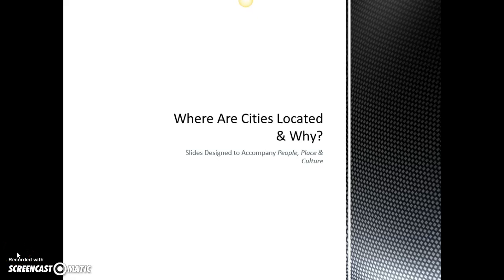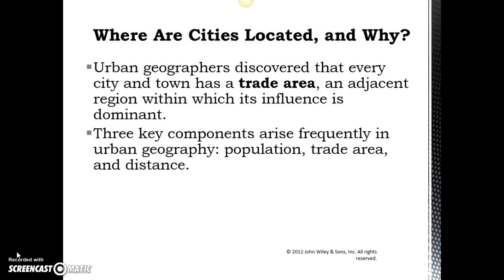Welcome to our brief lecture looking at where cities are located and why. The slides are designed to accompany the textbook 'People, Places, and Culture.' I'm Miss Gall, your host for the lecture. When we talk about where cities are located on the map, there are three key ideas: population, trade areas, and distance. We'll talk about each in terms of what influence it has on where we see cities located on the landscape.